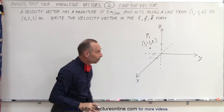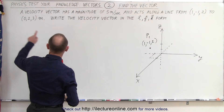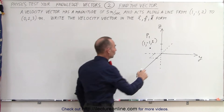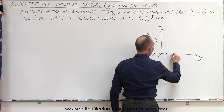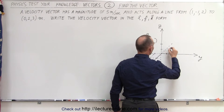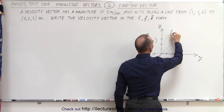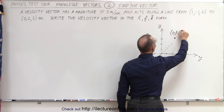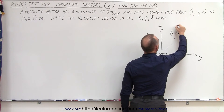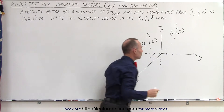Now let's find point two with coordinates zero, two, and three. So zero in the x direction, two in the y direction, three in the z direction. This would be our second point with coordinates zero, two, and three. Let's call that point two.